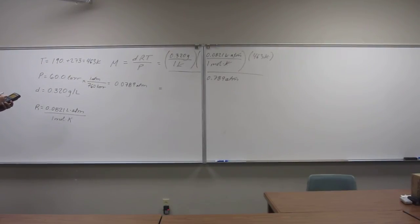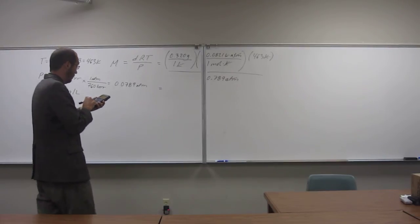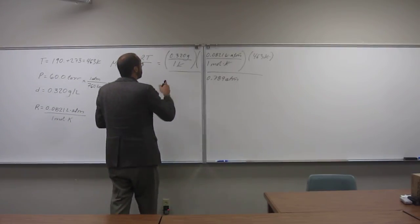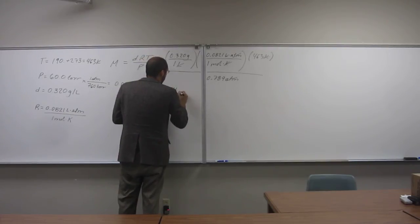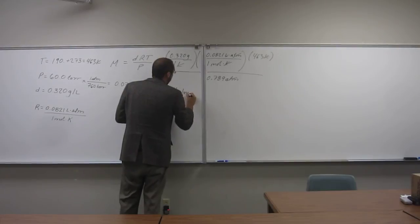463 Kelvin times 0.0821. So, to three sig figs, I get a molar mass of 154 grams per mole for eucalyptol.